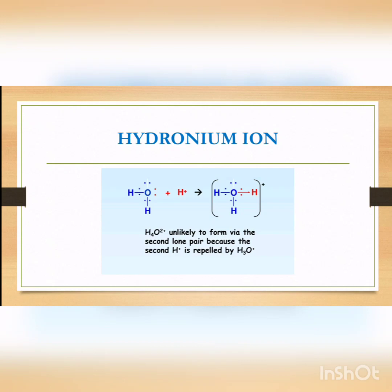A question that may come to mind: if a water molecule has two lone pairs and can give one lone pair to one hydrogen ion, why can't it give the other lone pair to another hydrogen and form H4O2⁺? This does not happen because once one hydrogen ion attaches with the water molecule, it forms a hydronium ion with an overall positive charge, which then repels any other incoming positive hydrogen ion. So there is no chance of H4O2⁺ forming, and the most stable structure is the hydronium ion.